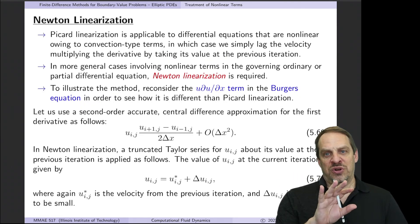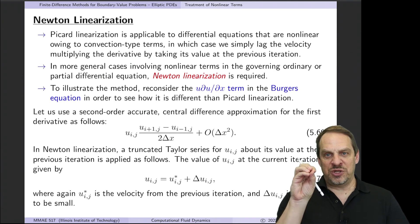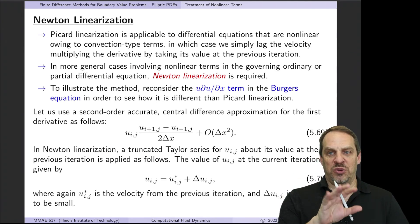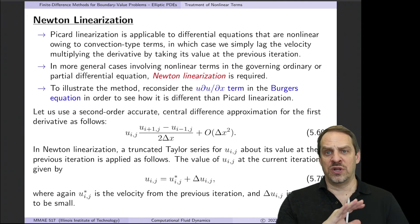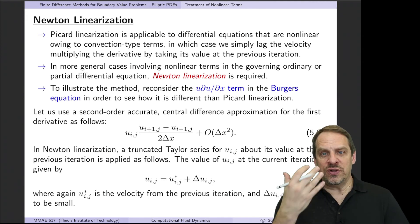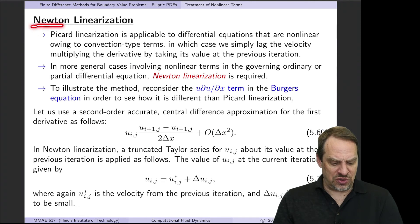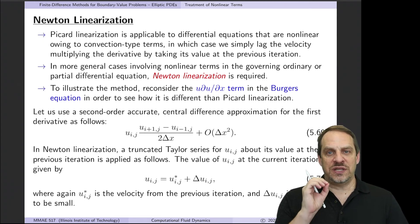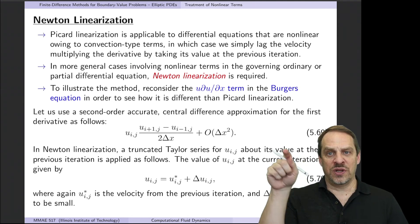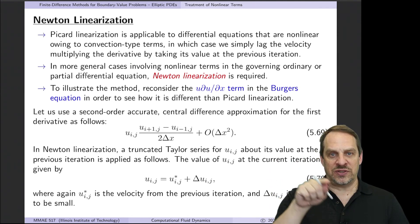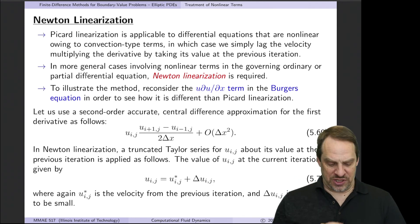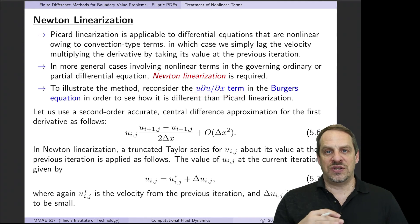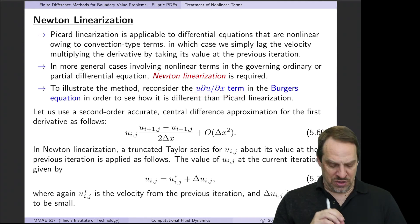That's for U ∂U/∂X type terms — the dependent variable times first derivatives of itself. Picard linearization is very simple, straightforward, and works well for these. For other types of nonlinearities, we use Newton linearization — the same idea as Newton's method for root finding or optimization. We locally linearize the equation, taking a nonlinear behavior and assuming it acts like a linear function locally.